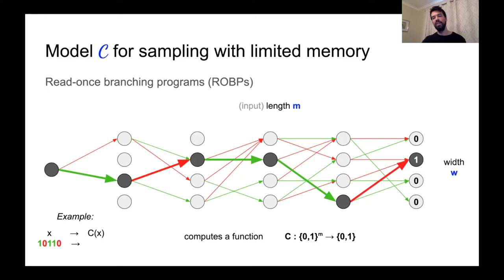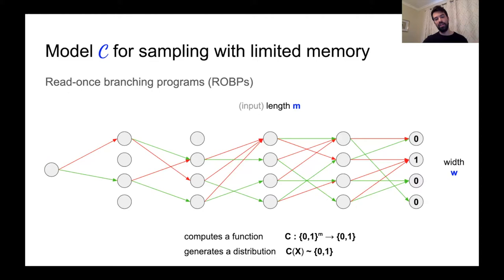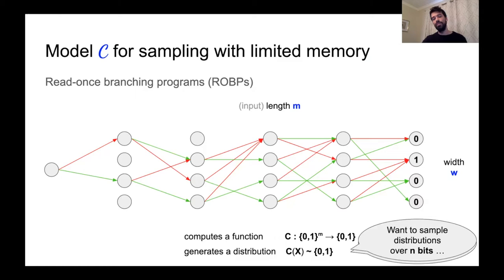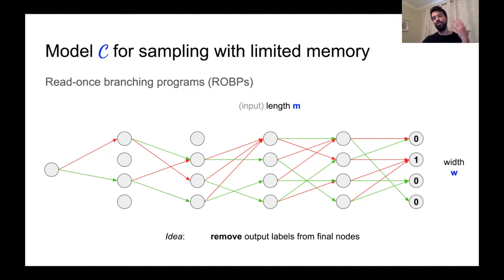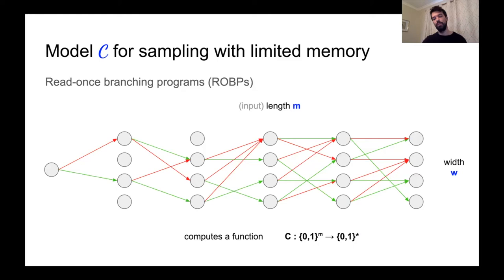While such an ROBP can generate a distribution by being fed a uniformly random bit string, this distribution will only be over one bit because the ROBP computes a function that outputs one bit. So we'd like to augment this model so that we can sample distributions over n bits. We need a so-called multi-output ROBP. The idea is to remove the output labels from the final nodes and add an output label to each edge in the ROBP.